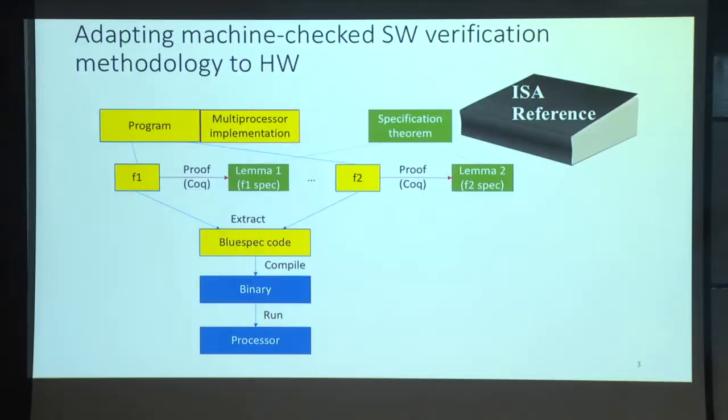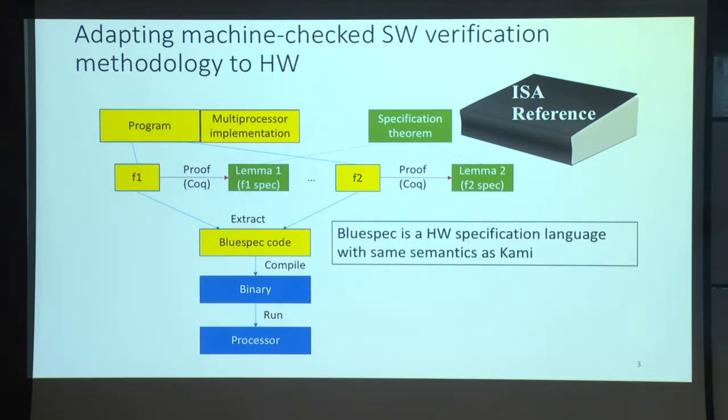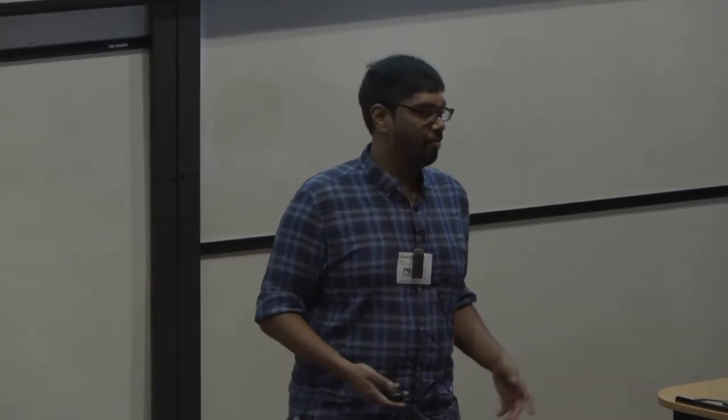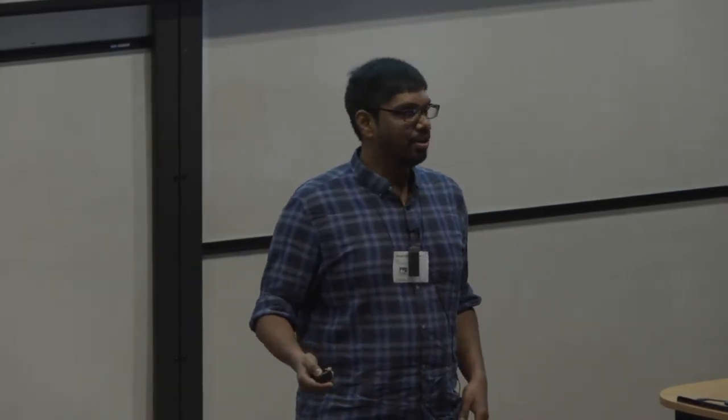We also have proof automation to compose these proofs to give the full system property. Just like in software, we can extract the hardware code written in the DSL into BlueSpec code. BlueSpec is a commercially supported hardware specification language with a significant presence in the industry. The semantics of BlueSpec matches exactly the semantics we implement for KAMI, making it a natural target. Using the commercially available BlueSpec compiler, we compile extracted KAMI designs into circuits, which can run on FPGAs or be taped as chips.